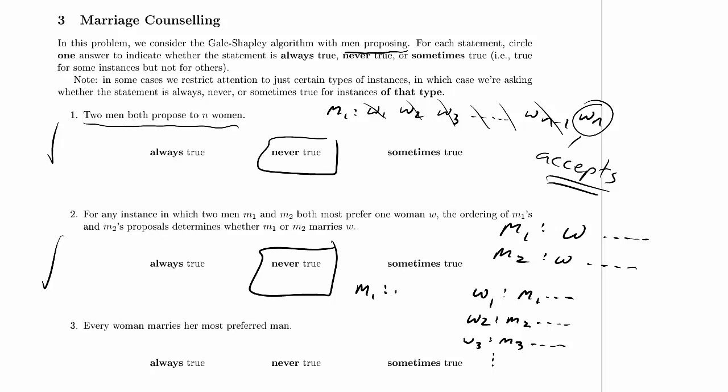We can make m-1 want to marry w-1, and in that case they're going to get together — nobody's going to break in on that arrangement because they'd both rather be married to each other than anyone else. We can have m-2 most prefer w-2, m-3 most prefer w-3, and so on. Then m-1 marries w-1, m-2 marries w-2, m-3 marries w-3. We can certainly find a configuration where this happens — we only need one example to show it's sometimes true.